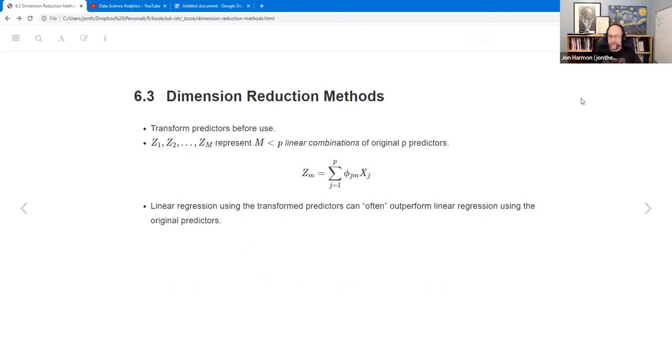So this is section 6.3, dimension reduction methods. The idea is you take your data and you transform it before you use it, before you use it for linear regression, specifically. And you make these Z subset of parameters, or not really subset of parameters, but linear combination of the original predictors, these new predictors. We'll talk more about exactly what they mean in different cases, but it's some constrained subset, a combination of the original predictors. Linear regression using the transform predictors can often help outperform linear regression using the original predictors.